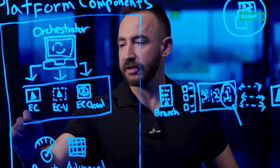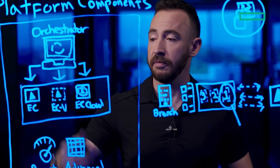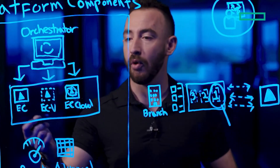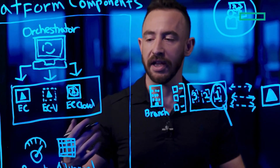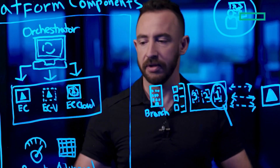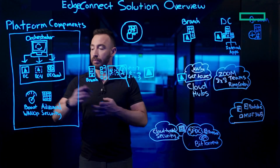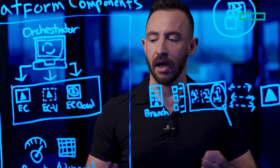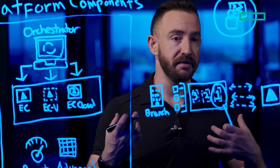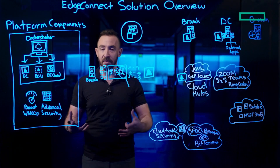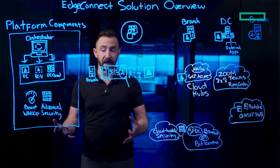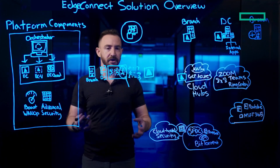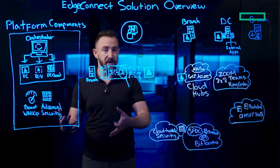EdgeConnect appliances come in multiple form factors: physical, virtual, deployed at a branch or a data center on any common hypervisor, or one-click deployment of EdgeConnect in popular cloud environments. Boost-WAN optimization is an optional feature to be applied where and when it is needed to solve the challenges of latency, bandwidth constraints, and bandwidth hungry applications. Advanced security license is a subset of advanced UTM features in the Aruba portfolio including intrusion detection and prevention.